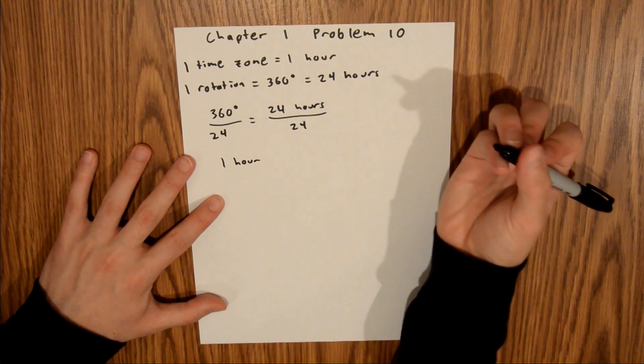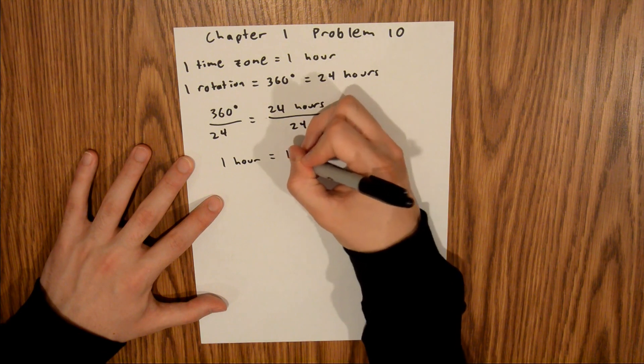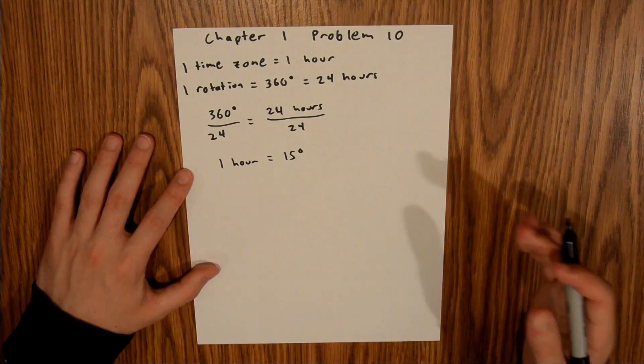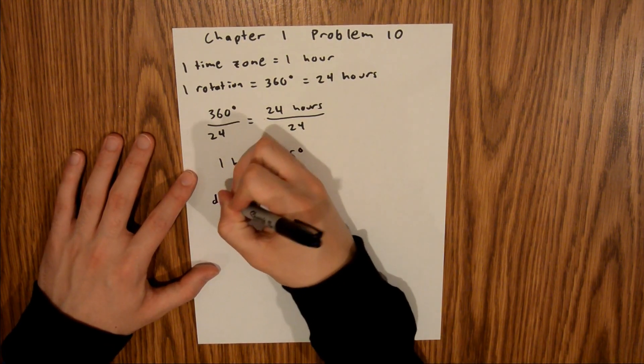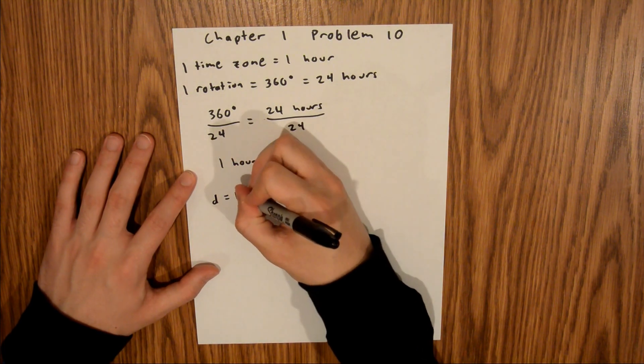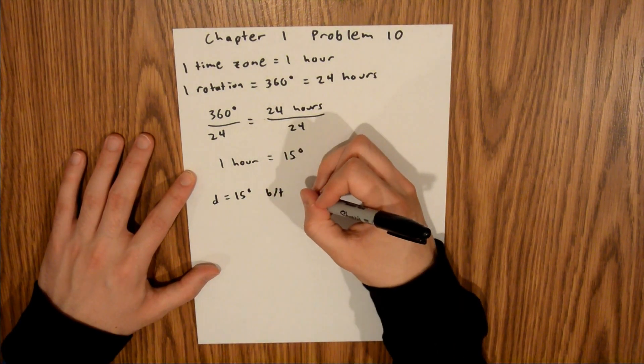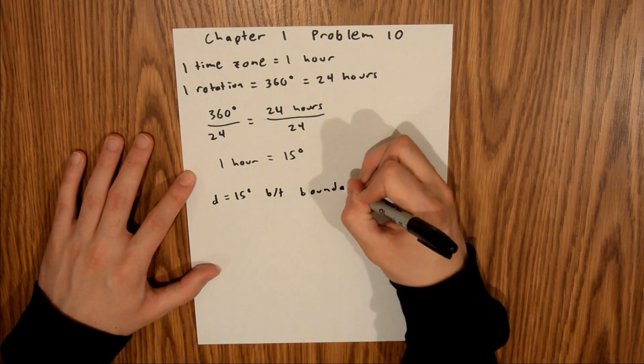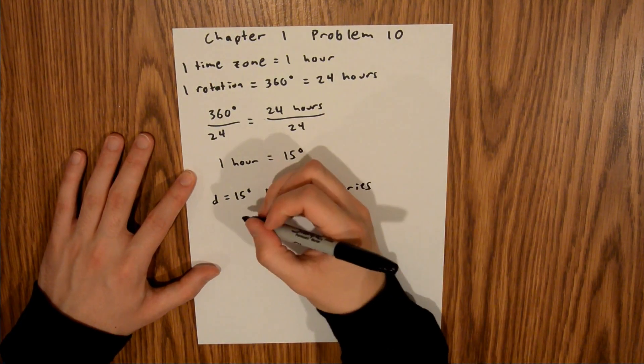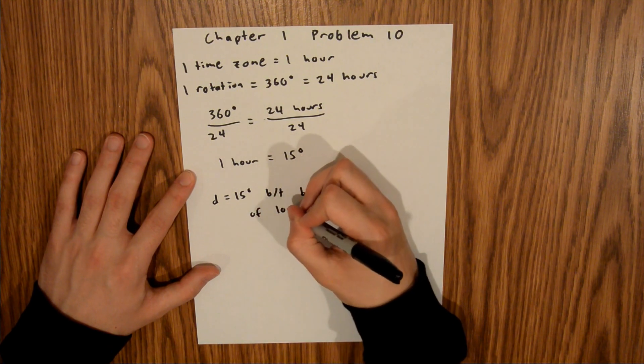or one time zone, is equal to 15 degrees of longitude, and that'll be your final answer. So your distance is equal to 15 degrees between boundaries of longitude.